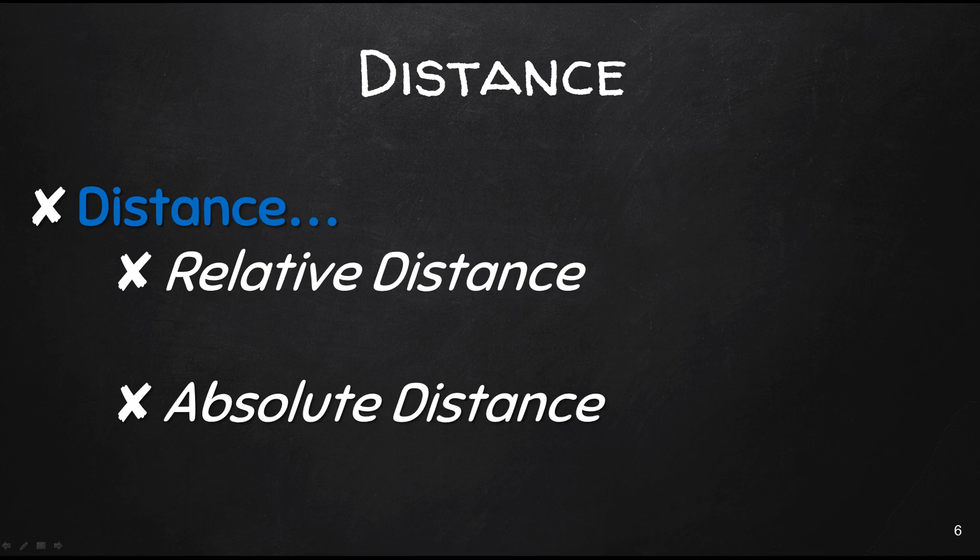Absolute distance is specific measurements between two locations. So it is the measurement you receive when you ask your mapping app to provide you with the directions from one location to another. In general, distances are provided to you either in metric or empirical units. So between one location and another, it is 10 miles. That would be absolute distance.